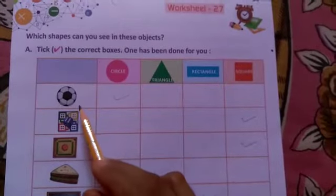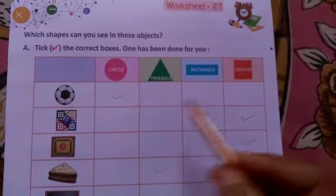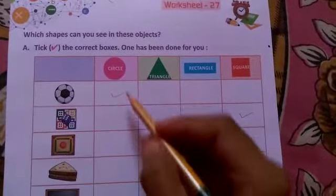First number is football. Now let's tell you what shape of football. It is a circle shape. So we will tick the circle shape in the box.